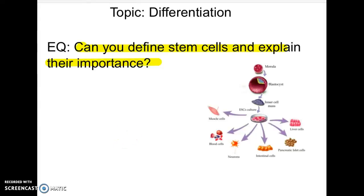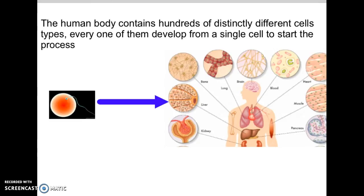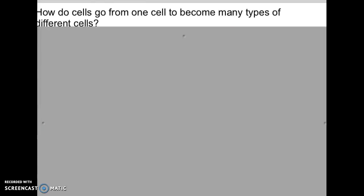For tonight's discussion we're going to talk about differentiation, which is chapter 10.4. Our essential question is: can you define stem cells and explain their importance? The human body is made of a hundred different types of specialized cells, and they all arrive and develop from one single fertilized cell between an egg and a sperm.